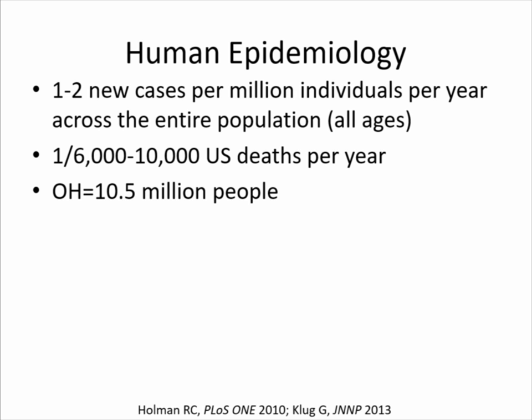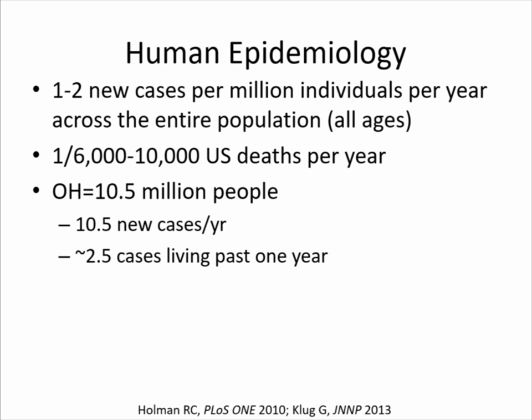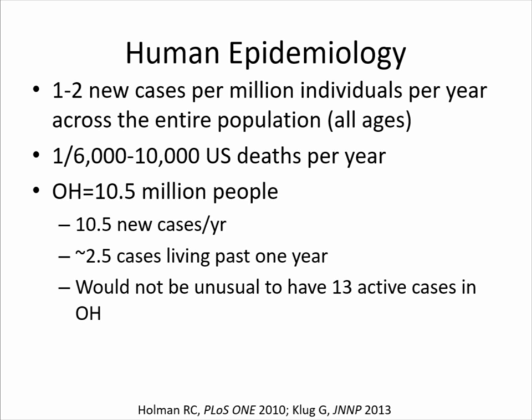To take Ohio as an example — we have about 10.5 million people. With an incidence of one per million, we'd expect about 10.5 new cases per year. About 25% of cases live longer than a year, so you'd carry over about 2.5 cases from the previous year. It wouldn't be unusual — and would actually be expected — to have 13 active cases in Ohio alone at any given time.